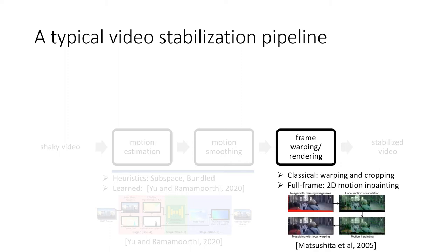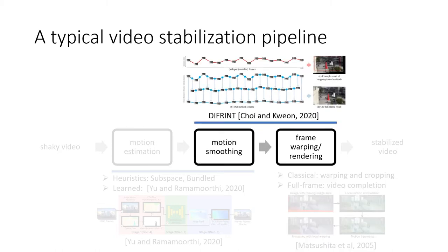To address this issue, full-frame video stabilization methods aim to stabilize videos without cropping. These methods use neighboring frames to fill in the blank and produce full-frame results by 2D motion inpainting. Recently, DIFRINT couples motion smoothing and frame rendering together and generates full-frame stable videos by iteratively applying frame interpolation. However, the repeated frame interpolation often introduces visible distortion and severe artifacts.